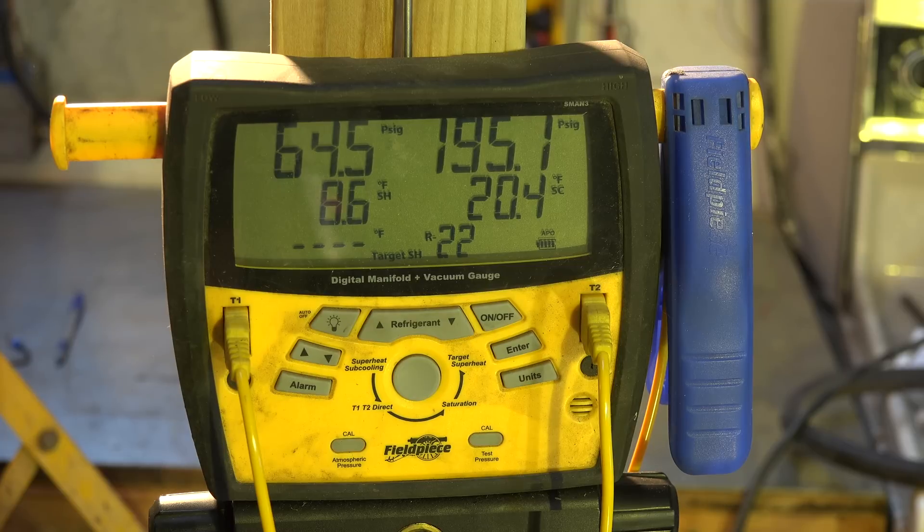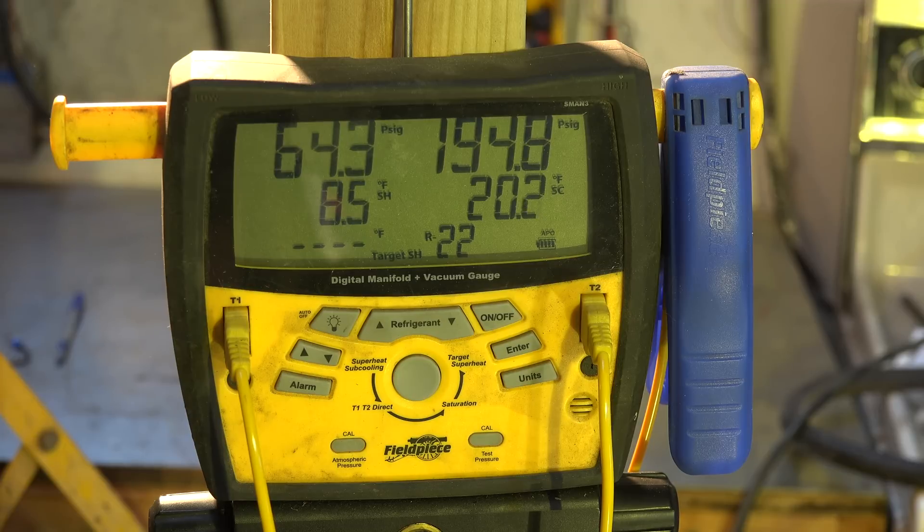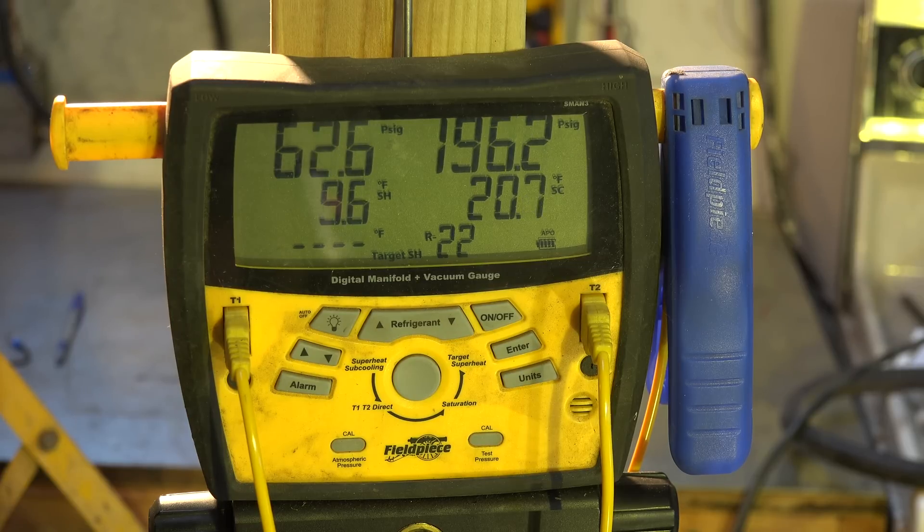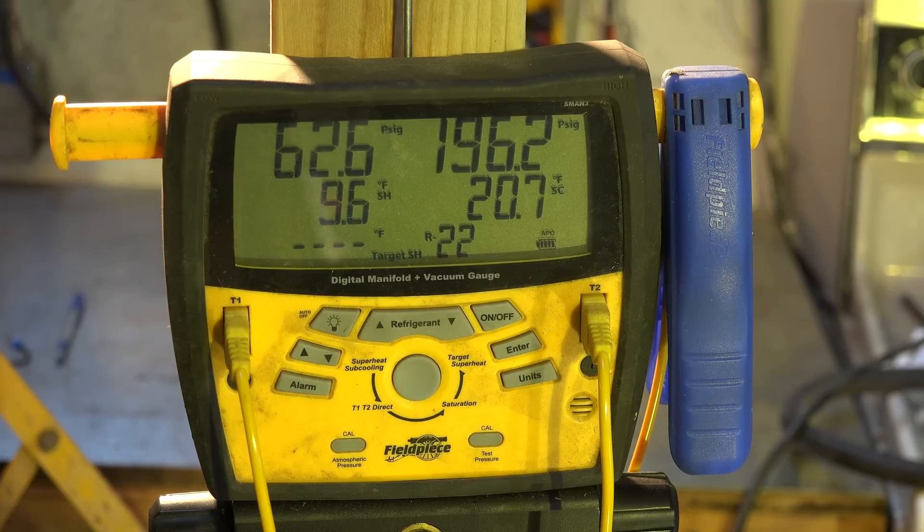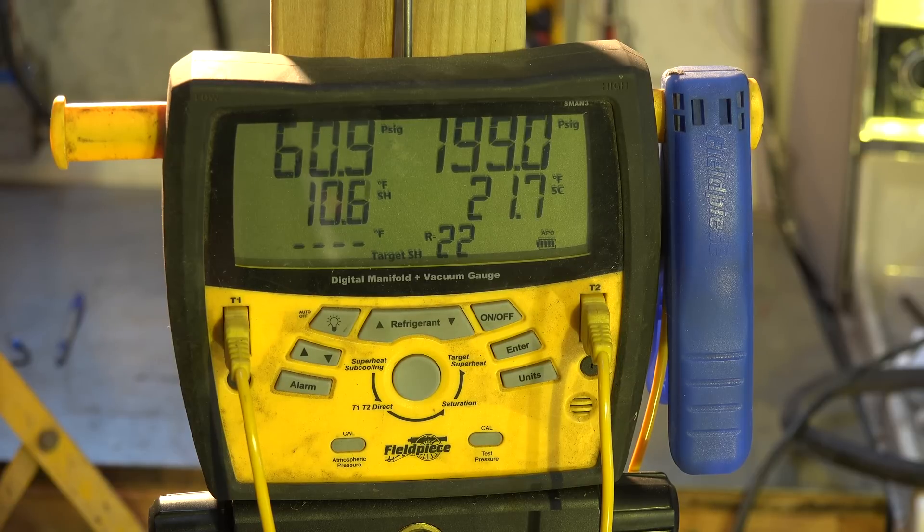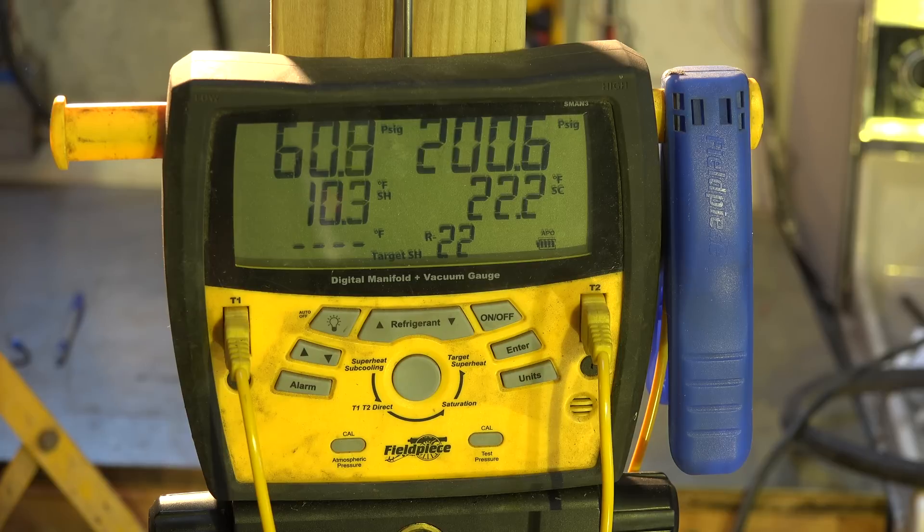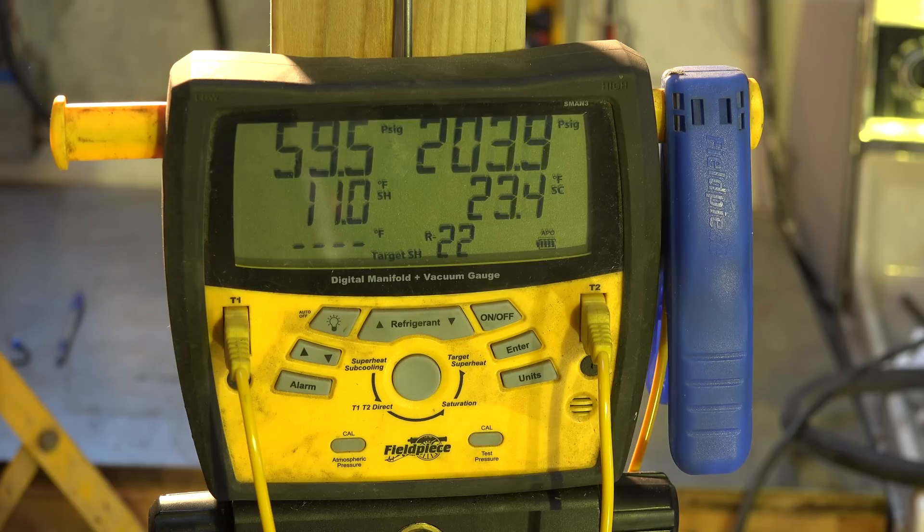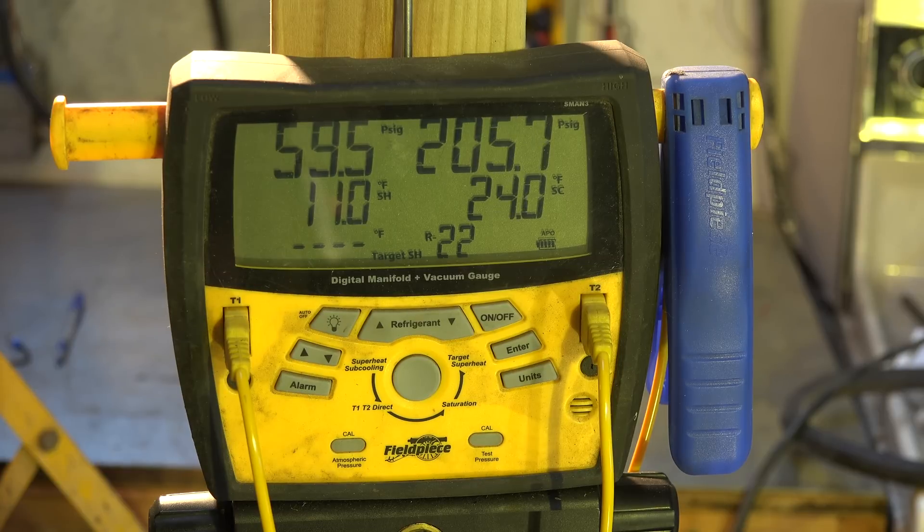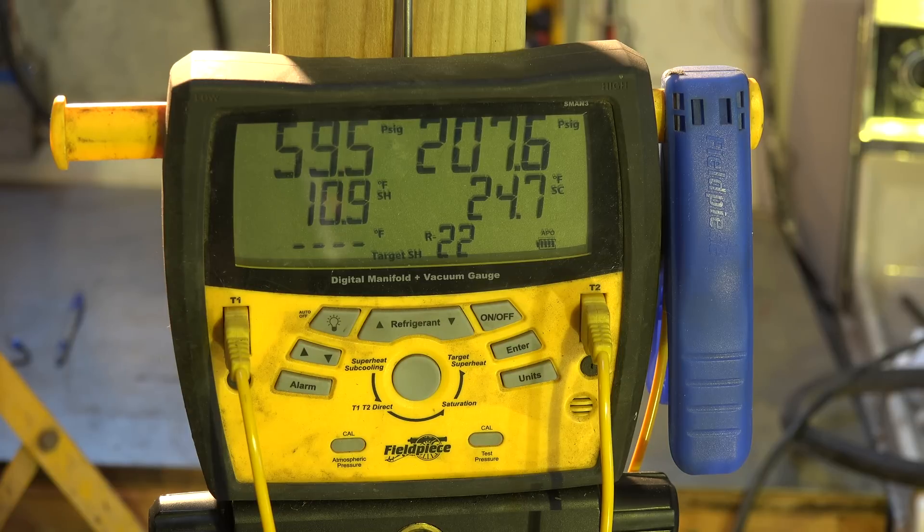Now we're back to where we should start the fan again. Superheat's about 8.4. You can see that kind of lag we have there. We're up to 11 and we've been as low as 8.4. What happens with these things is the superheat changes as the fan cycles on and off because of the pressure difference.